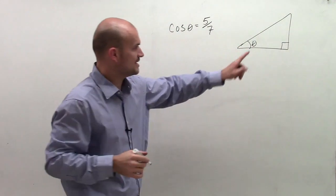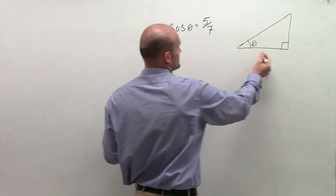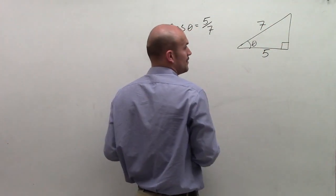So if I say here's theta and there's my right triangle, we know that opposite of my right angle is my hypotenuse. Now the cosine tells us that we have 5 as my adjacent side and 7 as my hypotenuse.